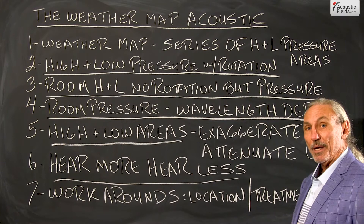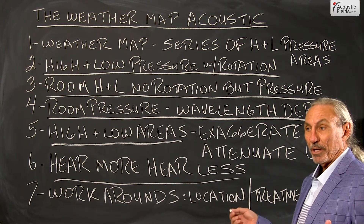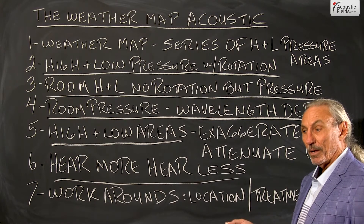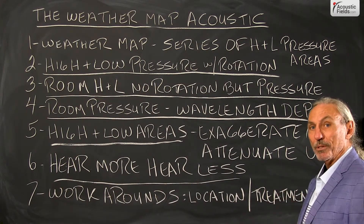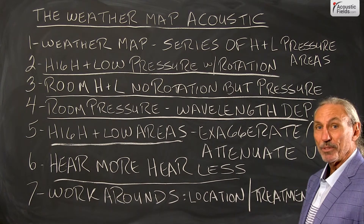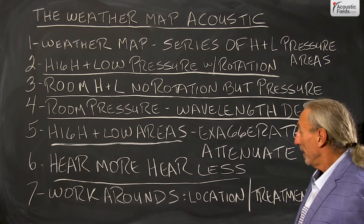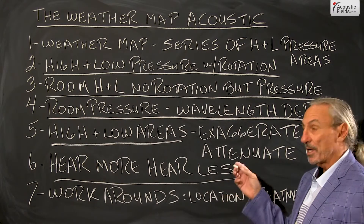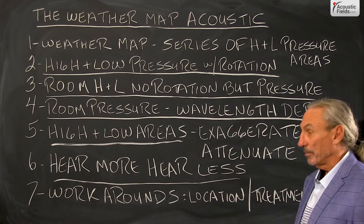The exaggerations are peaks and the attenuations are the dips. You're going to hear more or less energy, more or less sound. You can be in a null in a room — let's call it a 150 cycle null. You can EQ that null all you want, boost it until you blow the EQ up, but the room is not going to let you hear it. You'll have to treat the room or get a new room. So attenuation or exaggeration — those are the two things we'll deal with.